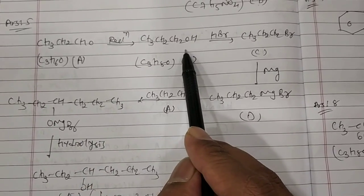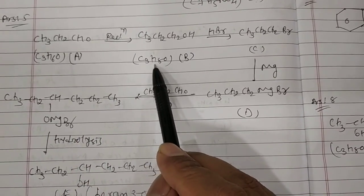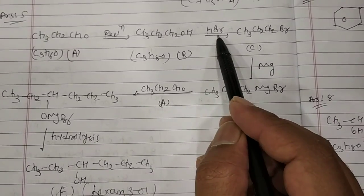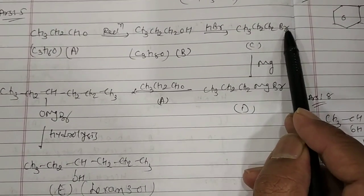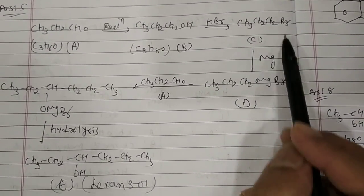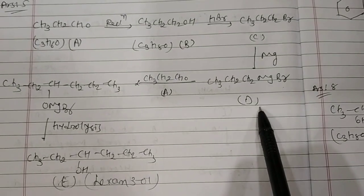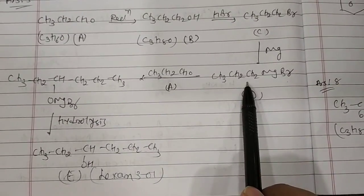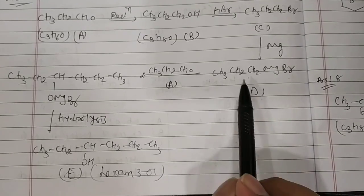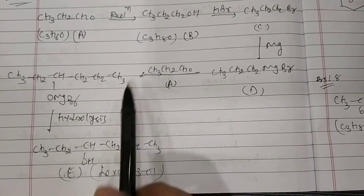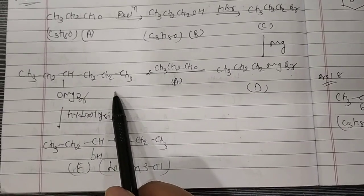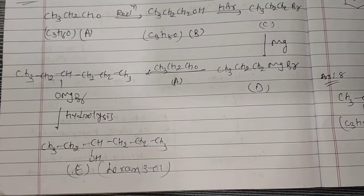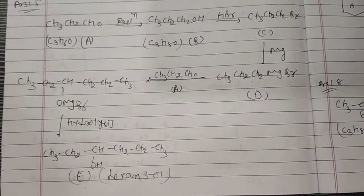This undergoes oxidation also, susceptible for oxidation, and undergoes reduction to CH3CH2CH2OH. So this is C3H6O, your component A. On reduction you get component B that is C3H8O. Now this undergoes HBr, so OH converts to Br. You get CH3CH2CH2Br. This reacts with Mg you get MgBr, you get your D. Now D reacts with A, means this aldehyde CH3CH2CH2CHO.